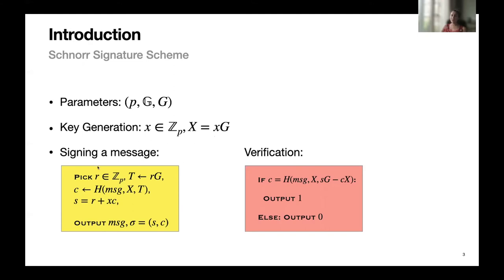The signer signs a message as follows. It first picks a random element R from Z_P, then generates T = R·G, which we call the commitment. It also hashes the message, the public key, and the commitment to obtain the value C. Finally, it computes S = R + X·C. The signature consists of C and S.